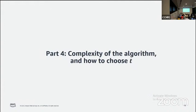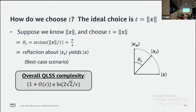Now I've described the algorithm. We can move on to the complexity and what's going on with this parameter t that we get to choose. How do we choose t? The ideal choice is to choose t exactly equal to the Euclidean norm ||x||. Why? Because if we make this choice, the angle between xt and en is exactly 45 degrees. When that's the case, if we do this kernel reflection, we'll exactly end up at |x⟩ with no need to repeat, because the success probability will be very close to 1.